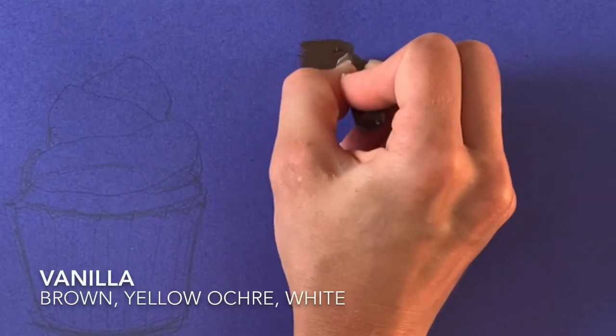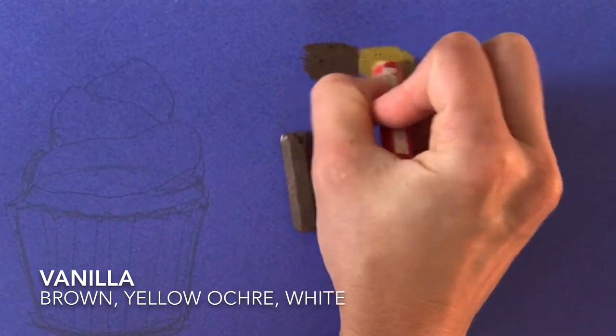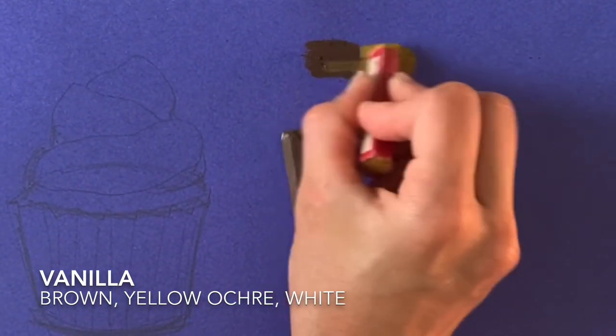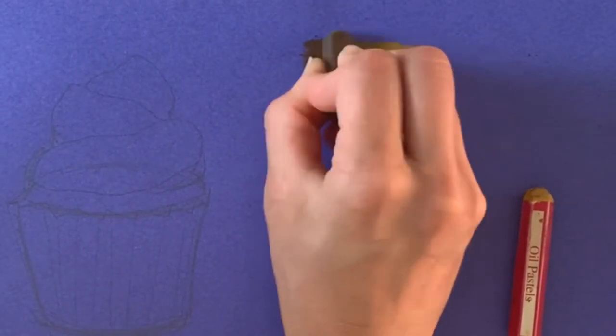So for a vanilla cupcake, you're gonna start with a dark brown and then you're going to mix it with a yellow ochre. When you blend colors, they aren't separate from each other, but you want to go back and make sure it goes from dark to light.